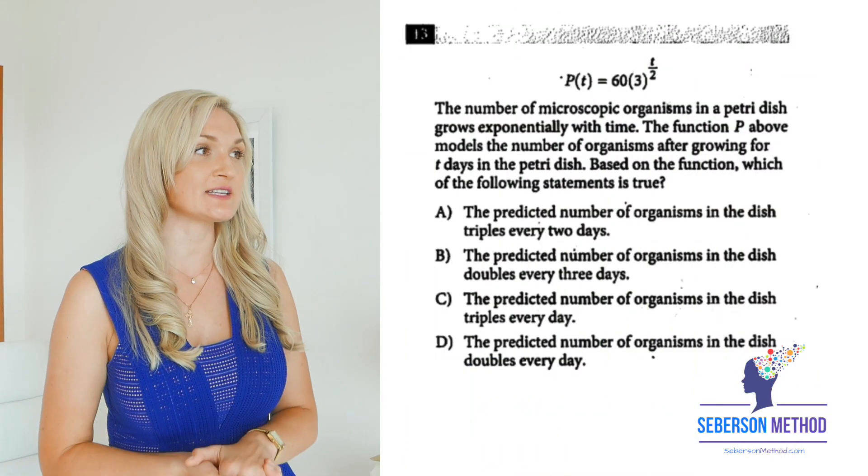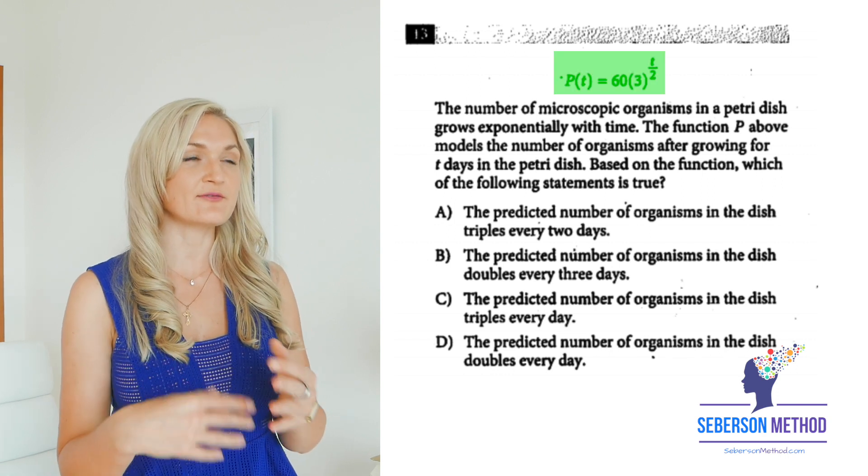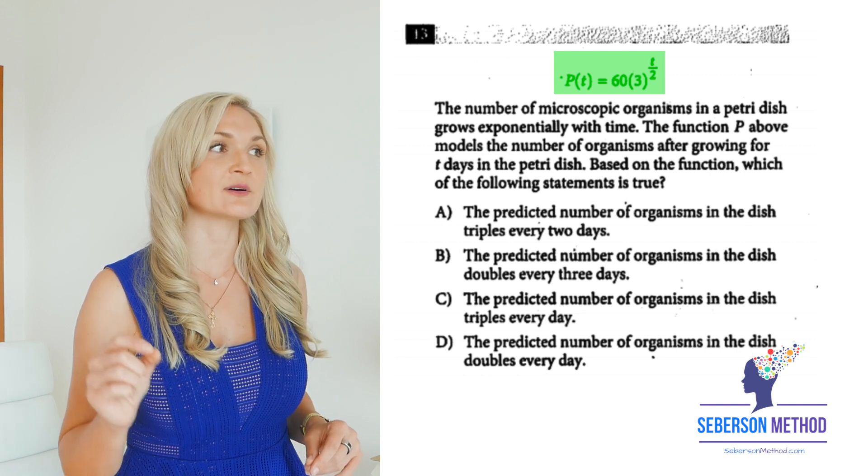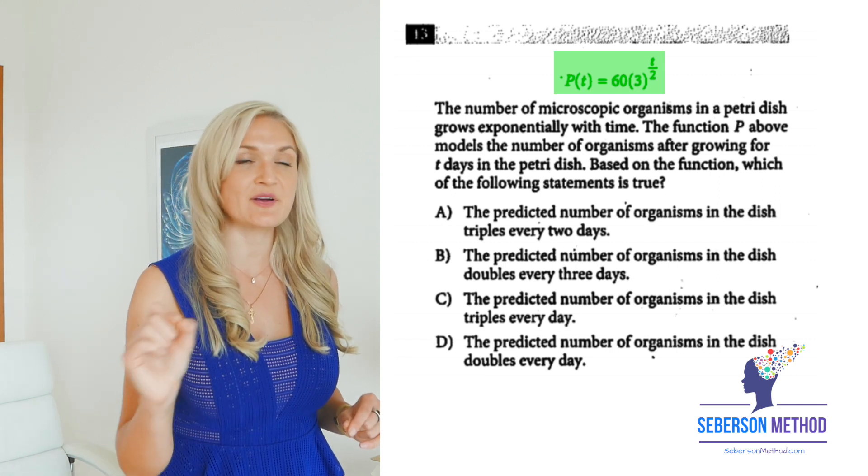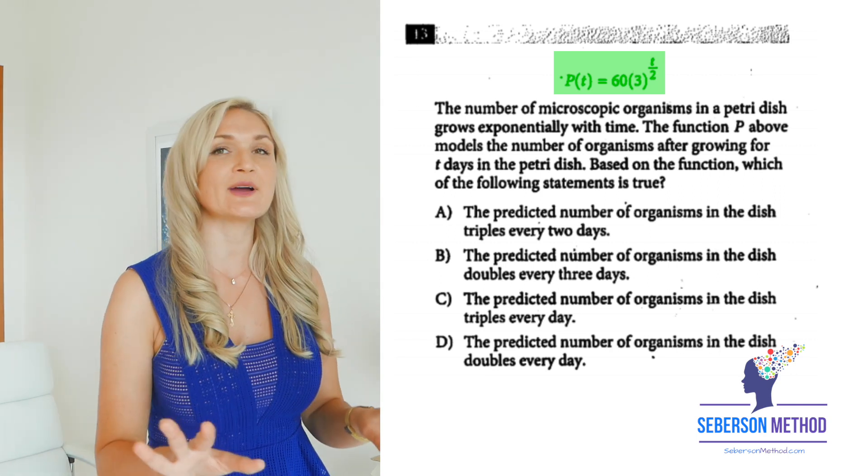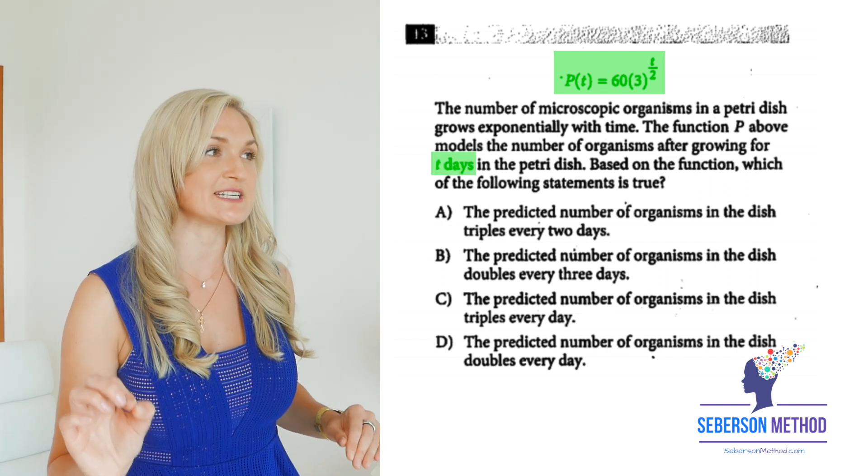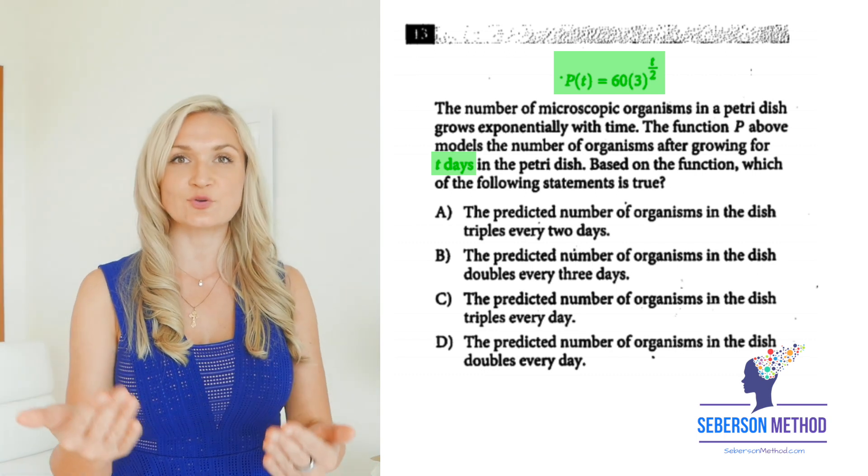The main skill with these types of questions is to learn how to tell the story of a function. Here in question 13, we have p of t. There's some kind of a function of time, and it goes like this: 60 times 3 to the power of t over 2. t is in days, t represents days. I don't want to know anything else about the function just yet. I'm not going to read the word problem. I just want to know that t is in days.